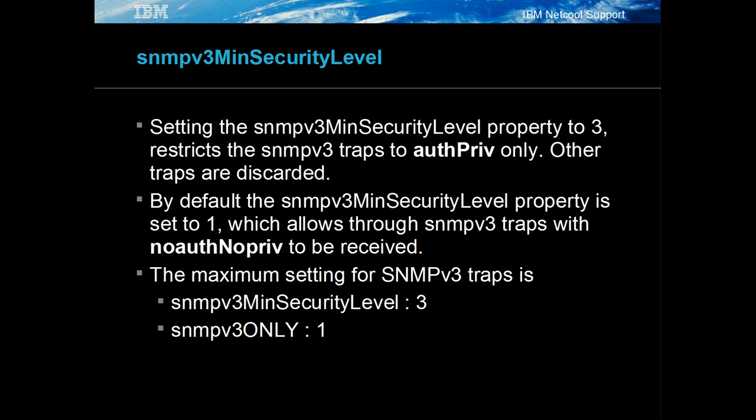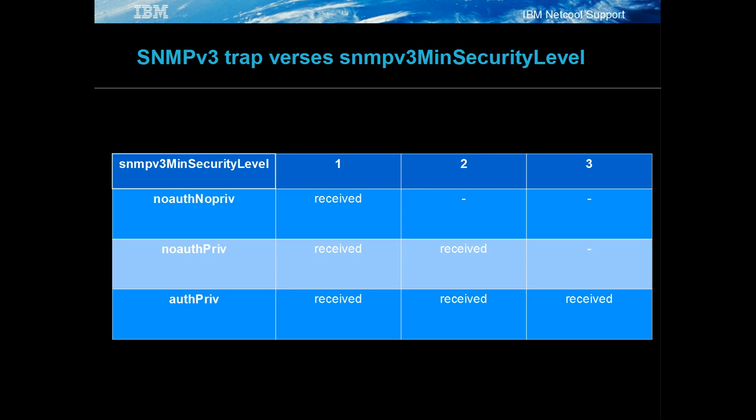With this setting, only auth priv traps will be processed by the probe; all other traps will be discarded. In this table, the way in which valid SNMP v3 traps are discarded is depicted when the SNMP v3 min security level property is increased.